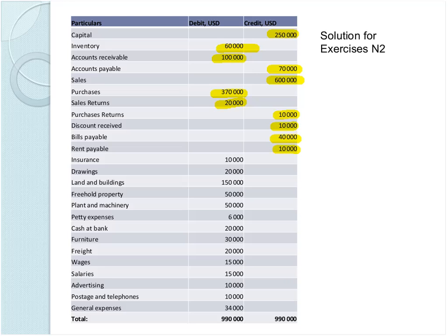We have some expenses. Insurance is our expense, we put on the debit side. Drawings — the owners draw some money from the company — we put on the debit side, it seems as expenses. Land and buildings is our equipment and buildings — the company's assets and resources — we put on the debit side. Freehold property, plant and machinery — the company's main resources — we put on the debit side as well.